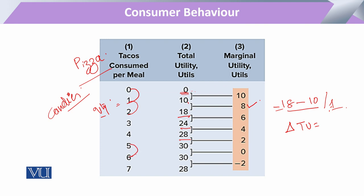Similarly, at the point of 5 and 6, we get 30 minus 30 divided by the change, giving zero. This marginal utility — the utility attained from one additional unit of the commodity — is the basic unit that helps in the decision-making of the consumer. When deciding how much to pay or whether to substitute with another unit, the consumer compares the marginal utilities of both goods and chooses the one with higher marginal utility.